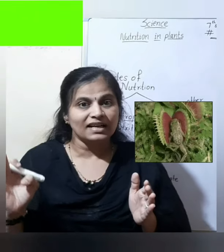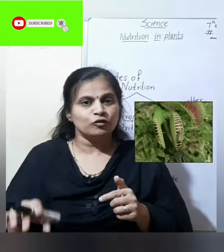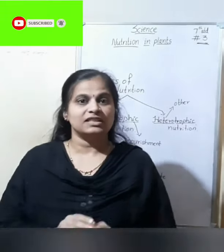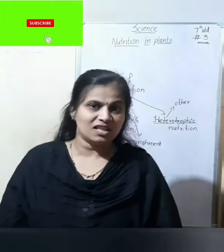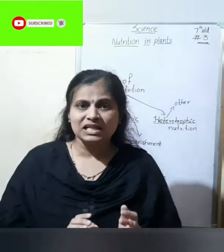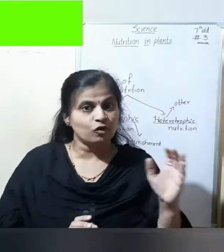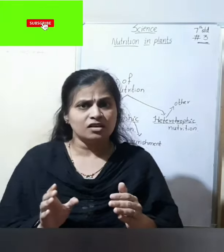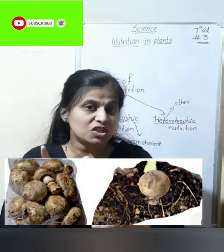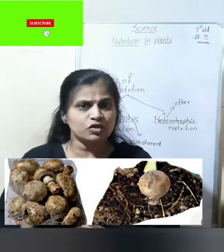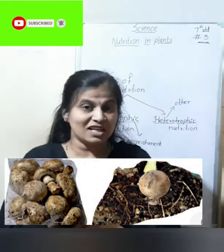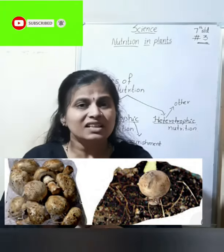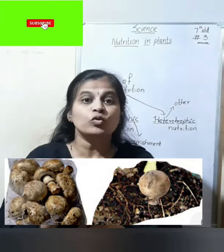Another example of an insectivorous plant is the Venus flytrap, which also fulfills its nutrition by trapping insects. Moving on to saprotrophic mode of nutrition — saprotrophs completely depend on dead and decaying matter for their nutrients. Have you seen a fluffy umbrella-like structure growing in moist soil or rotting wood? That is mushroom. Mushrooms are saprotrophs.